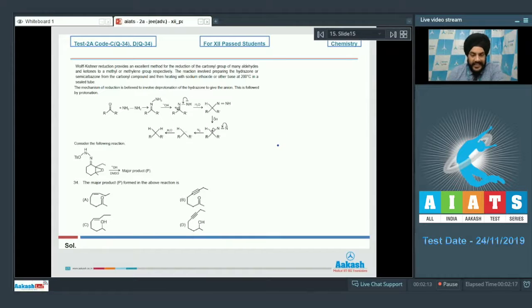Let us look at the comprehension for questions 34 and 35, based on the Wolf-Kishner reduction. The Wolf-Kishner reduction provides an excellent method for the reduction of the carbonyl group of many aldehydes and ketones to a methyl or methylene group respectively. The reaction involves preparing the hydrazone or semi-carbazone from the carbonyl compound, then heating with sodium methoxide or other base at 200°C in a sealed tube. The mechanism involves the deprotonation of the hydrazone to give the anion, followed by protonation.